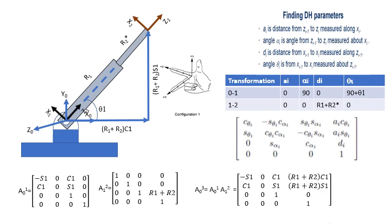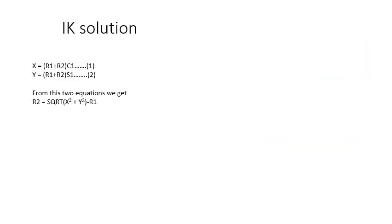Now let's see the inverse kinematic solution. You have two equations now: x equals r1 plus r2 cos theta 1, and y equals r1 plus r2 sin theta 1. If you square these two equations and sum them up, then you can get basically r2 to the square root of x square plus y square minus r1.